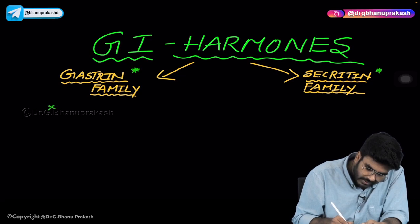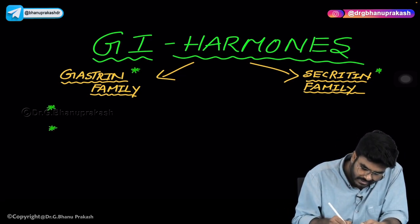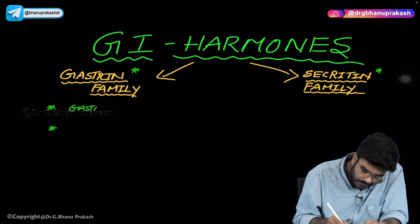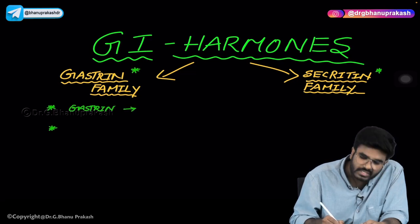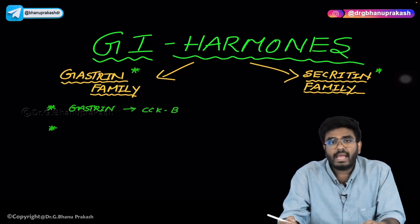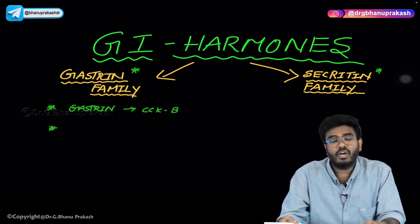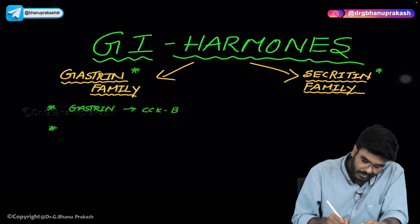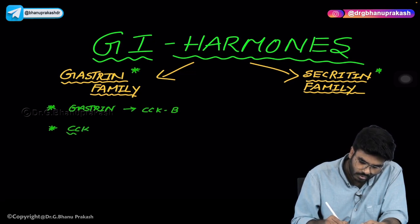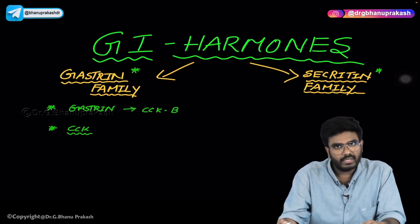Which GI hormones come under the gastrin family? The gastrin family includes gastrin, which uses the CCKB receptor. Gastrin comes from G cells and acts on parietal cells via the CCKB receptor to help in acid production. Cholecystokinin also comes under the gastrin family, using the CCK receptor.